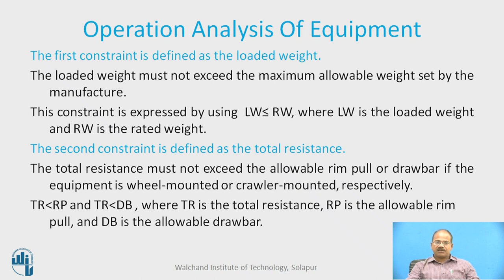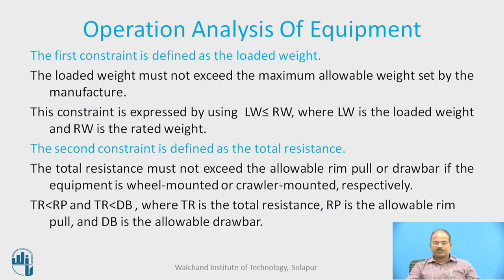The rated weight is normally found in the equipment manufacturer's information. The second constraint is the total resistance — it must not exceed the allowable rim pull for wheel-mounted equipment or the drawbar for crawler-mounted equipment. Therefore, TR ≤ Rw (rim pull for wheels) or TR ≤ DB (allowable drawbar for crawler-mounted) is the second constraint.